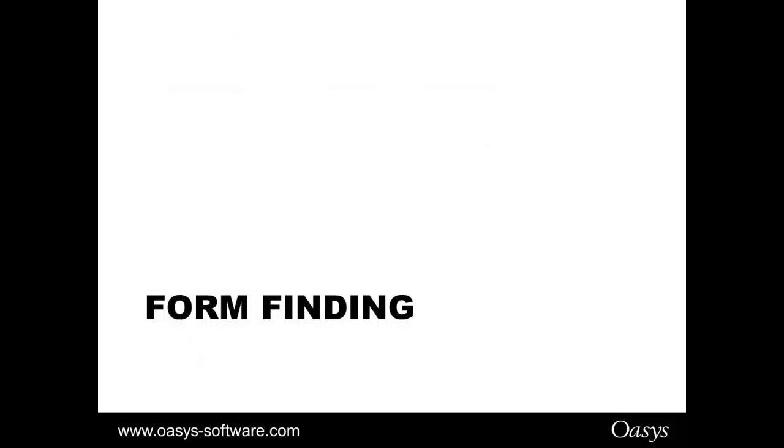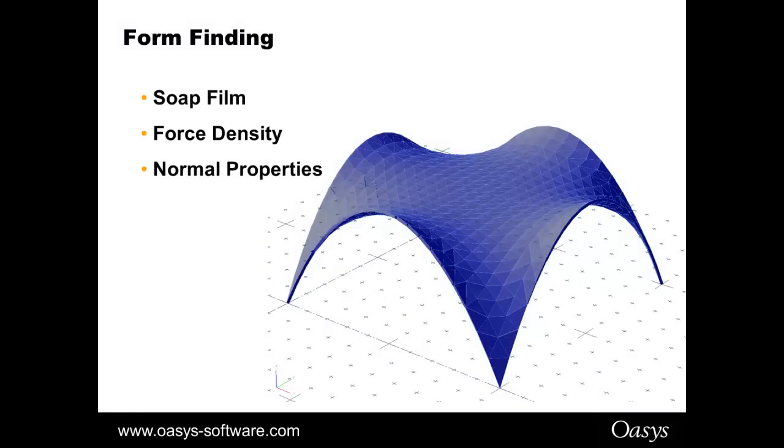Form-finding itself: in GSA we have a variety of form-finding methods and these form-finding methods are all about finding a new shape for the structure where the loads and pre-stresses and constraints are all in equilibrium to each other. It's a special type of analysis, it doesn't produce reactions and deflections and moments and so on as a normal analysis does. What it does instead is it produces a new geometry, it moves the structure around and it can also produce pre-stress loads for you. The idea is the pre-stress will be in equilibrium with the constraints. We have three methods in GSA for achieving this: the soap film, the force density and the normal properties.